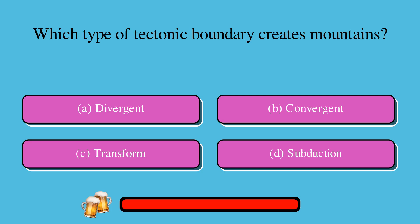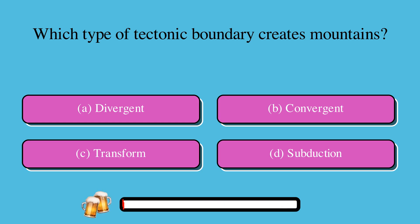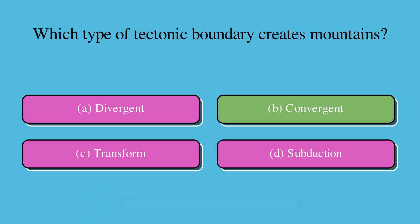Which type of tectonic boundary creates mountains? A. Divergent, or B. Convergent, or C. Transform, or D. Subduction? The correct answer is B. Convergent.